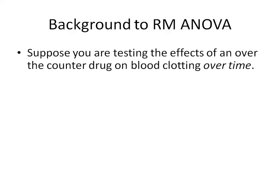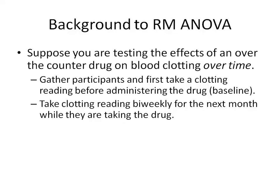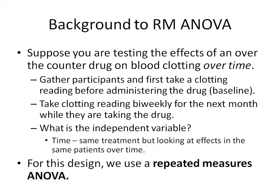A little bit of background to repeated measures ANOVA. Suppose a scenario where you're testing the effects of an over-the-counter drug on a patient's blood clotting over time. You gather your participants and take a clotting reading before administering the drug, which is your baseline, and then take readings bi-weekly for the next month. The independent variable is time, as you're giving the same treatment but looking at the effects in the same patients over time. For this design, you use what's called a repeated measures ANOVA.